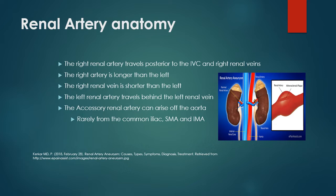Rarely would you see an accessory renal artery coming off the common iliac, SMA, and inferior mesenteric. With that being said, it does happen. You could see an accessory renal artery coming off the common iliac, SMA, and IMA. There are literatures on this topic as well. However, I have not personally seen an accessory renal artery coming off the iliac, SMA, and IMA, but it does rarely occur.